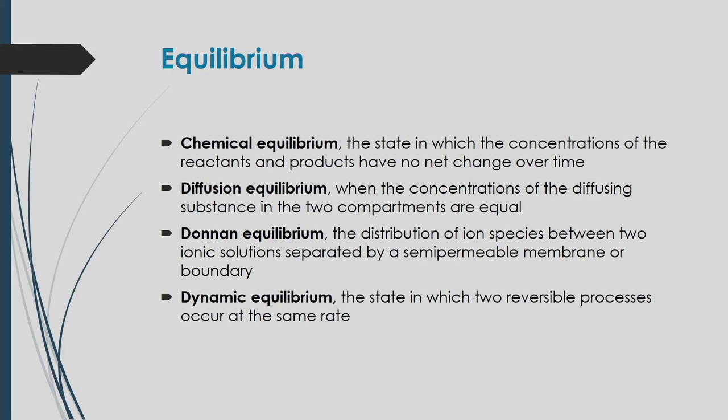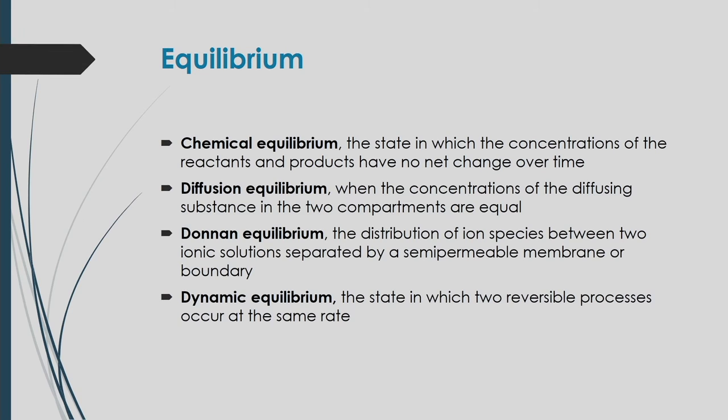Donnan equilibrium refers to the distribution of ionic species between two ionic solutions separated by a semipermeable membrane or boundary, where the ionic species reach equilibrium. Dynamic equilibrium is the state in which two reversible processes occur at the same rate simultaneously.